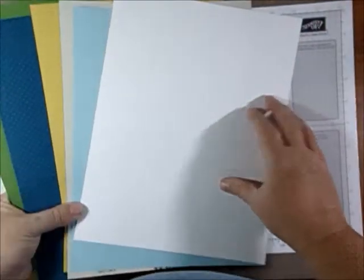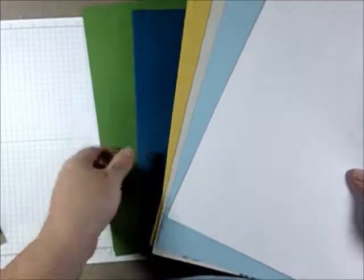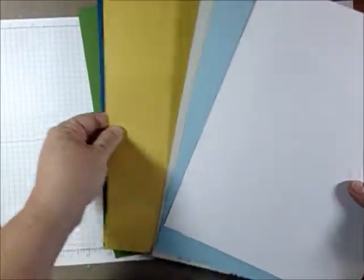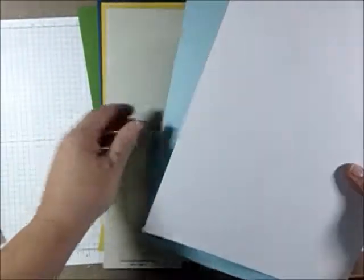And then you get green, navy, yellow, a light gray, a blue and a white cardstock.